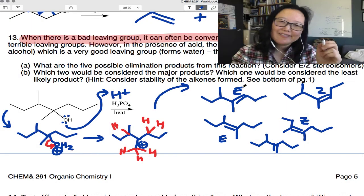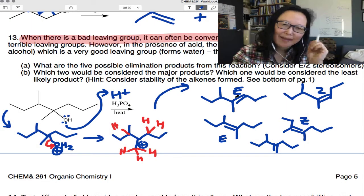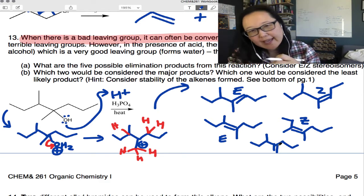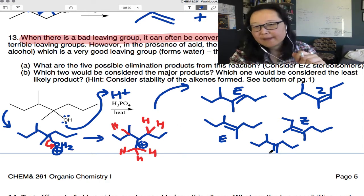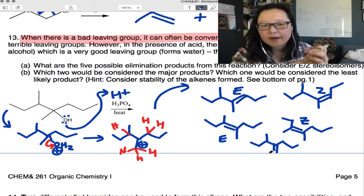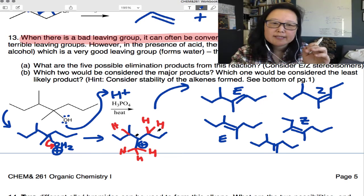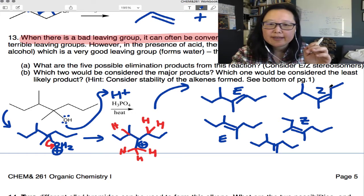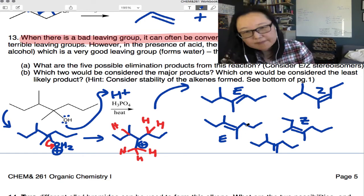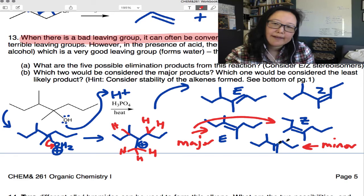So I've got five different alkenes here. I've got my E and Z version from these beta hydrogens being removed. This one results in this E and Z, and then these result in those. And our minor product would be the Hoffman because it's the least stable product. And our most stable ones would be our tetra-substituted if we have any of those right here. We've got tetra-substituted right here. So these would be major, and this would be minor.